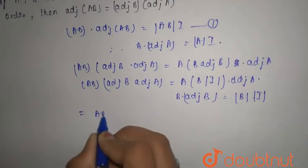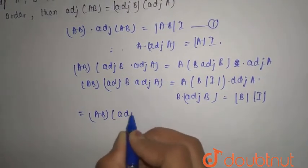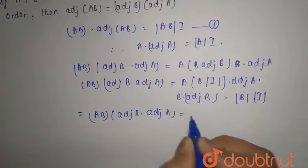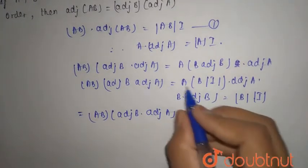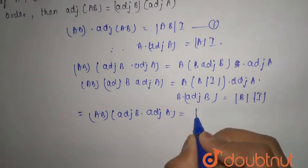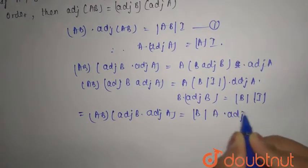So again you have AB adjoint of B into adjoint of A equals, this is what? This is B mod A into adjoint of A.